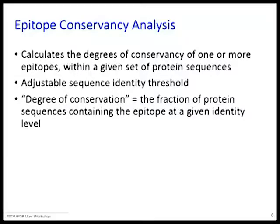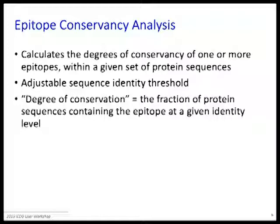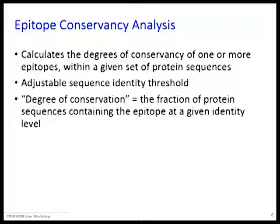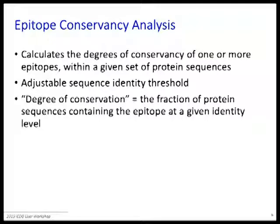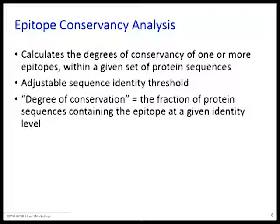You need to define what it means to be conserved. You might say that as long as this epitope is at least 80% conserved, I call it conserved — or 70%, or 90%. Then you say: I have a set of 100 sequences, and I want to know, for this particular epitope, how many times is it conserved at 70% or more, 80% or more, or 100%? So you pick the threshold you define as conserved, and the tool will calculate what fraction of sequences have that level of conservation.